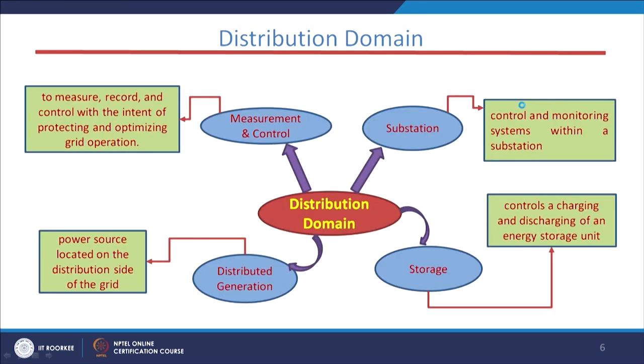The functions of the components of the distribution domain — measurement control, distributed generation, storage, and substations — are more or less equivalent to those in the transmission domain. All domains of the smart grid architecture are interlinked with each other for smooth, reliable, accurate, and fast operation of the smart grid system.